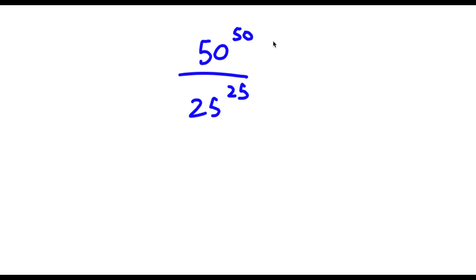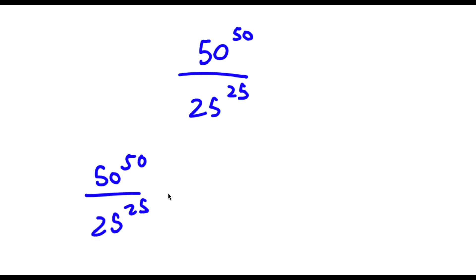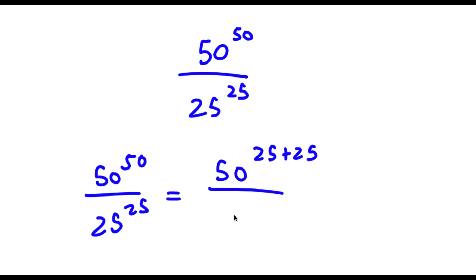Alright, so I have 50 to the power of 50 over 25 to the power of 25. This is the same thing as 50 to the power of 25 plus 25, over 25 to the power of 25, because 50 here is the same thing as 25 plus 25.